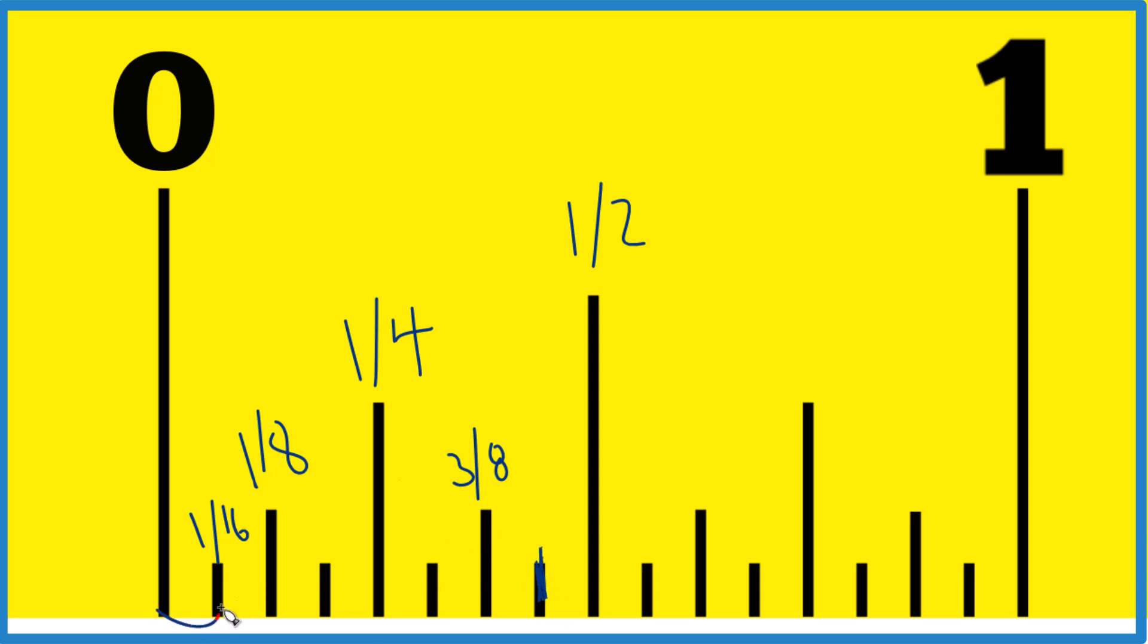So these are sixteenths. So we'll go one, two, three, four, five, six, seven, seven-sixteenths. So like we found before, halfway between three-eighths and one-half, that's seven-sixteenths. But now you know how to do it if you don't have those numbers written in.